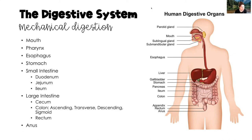Starting in the mouth, moving to the pharynx, the esophagus, the stomach, then to the small intestine — which has three parts: the duodenum, the jejunum, and the ileum — then into the large intestine, the cecum, and then the colon with its ascending, transverse, descending, and sigmoid sections, finally to the rectum, where waste is expelled through the anus.